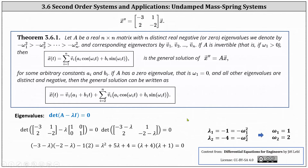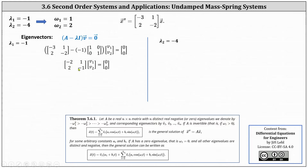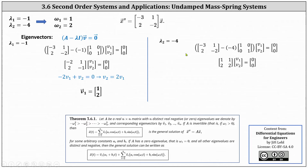Now we determine the corresponding eigenvectors by solving (A minus lambda I) times V equals zero. For lambda one equals negative one, simplifying gives the matrix with entries negative two, one, two, negative one. Using the first equation, negative two V one plus V two equals zero, so V two equals two V one. Letting V one equal one gives eigenvector V one equal to the vector [1, 2]. For lambda two equals negative four, the first equation gives V one plus V two equals zero, so V one equals negative V two. Letting V two equal negative one, the corresponding eigenvector V two is [1, negative one].